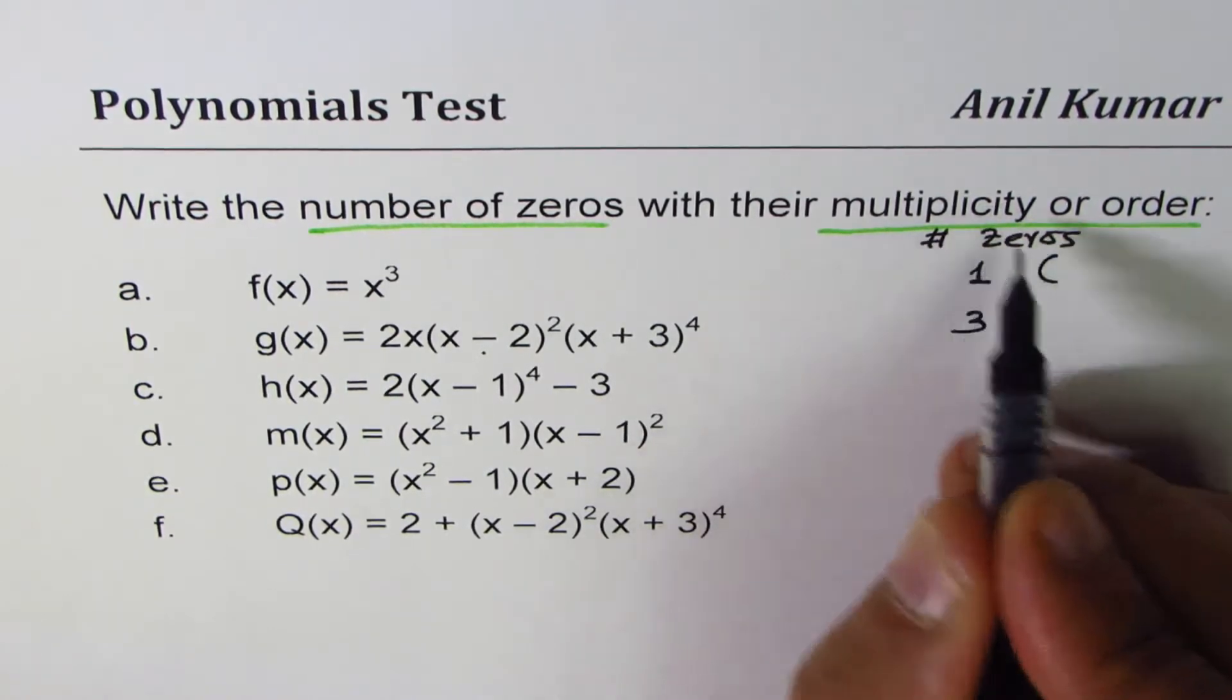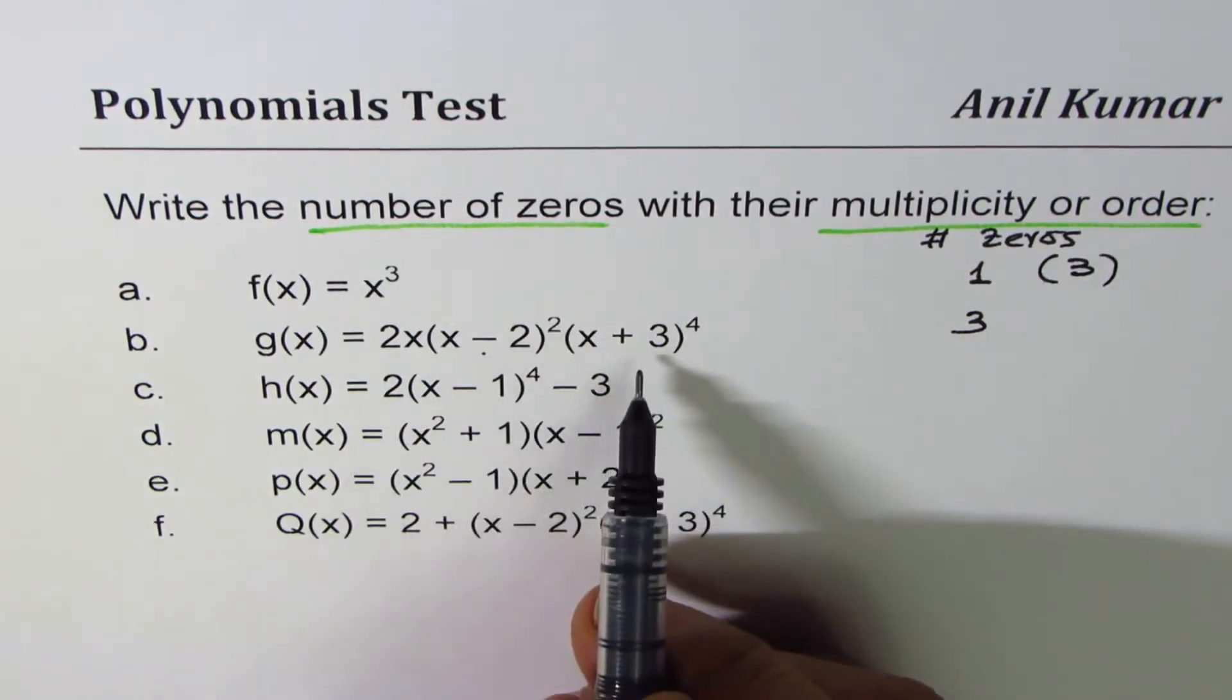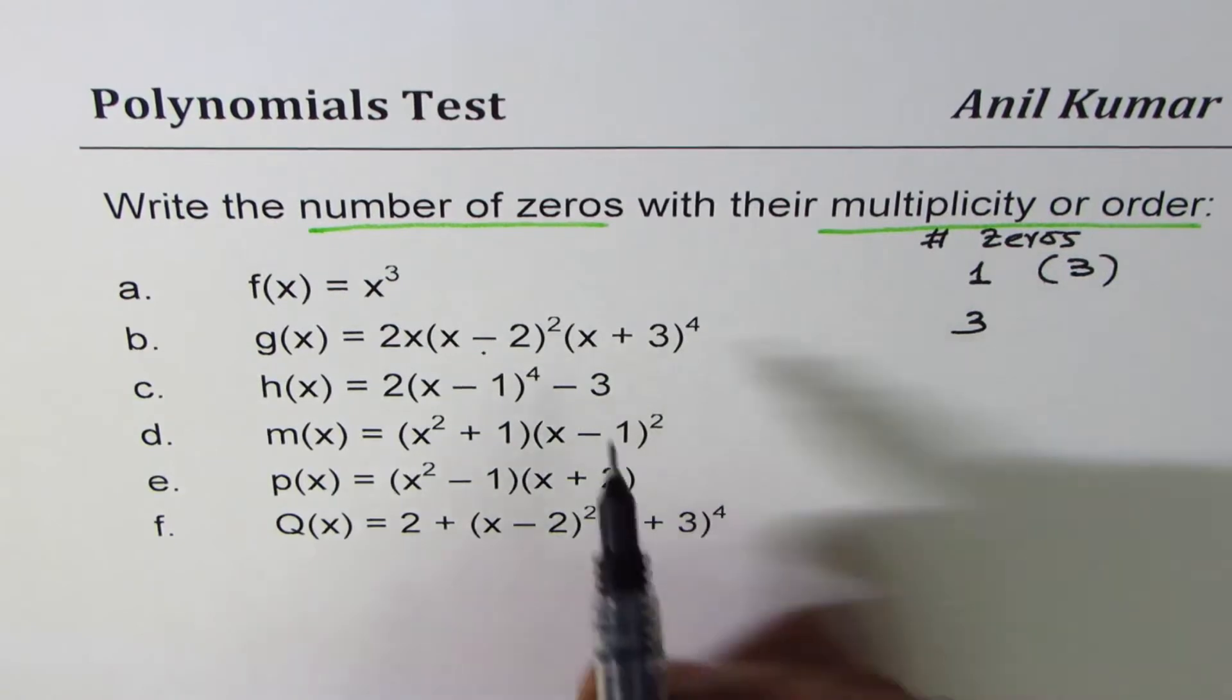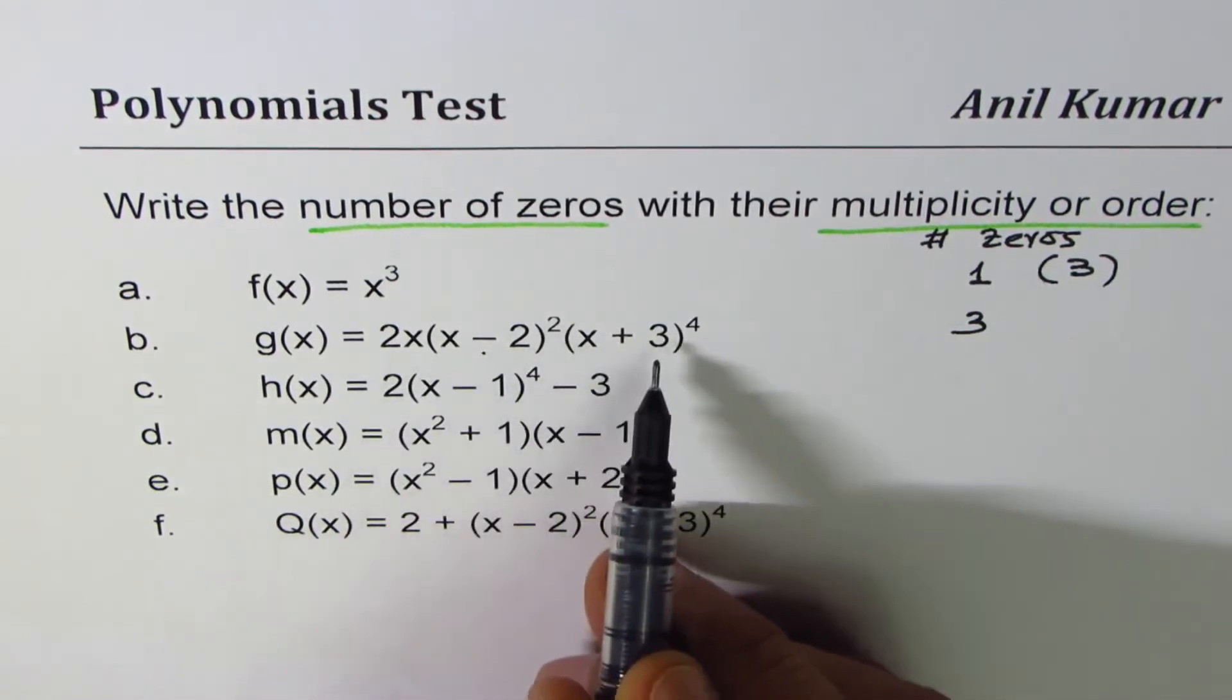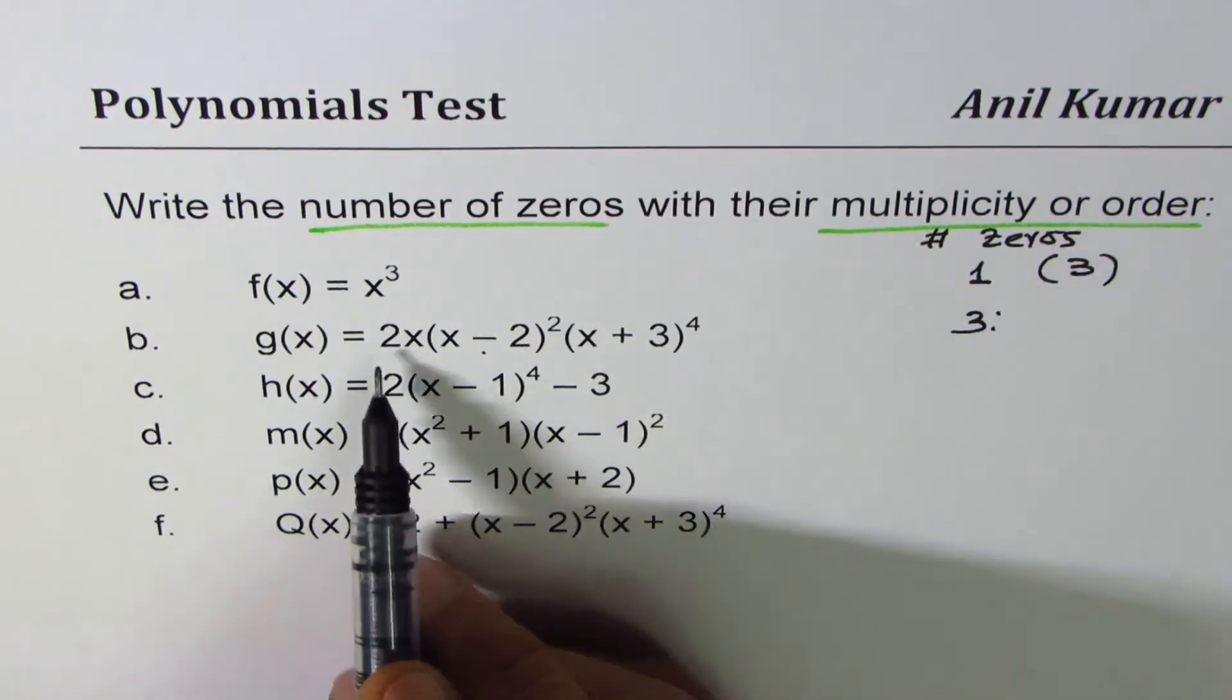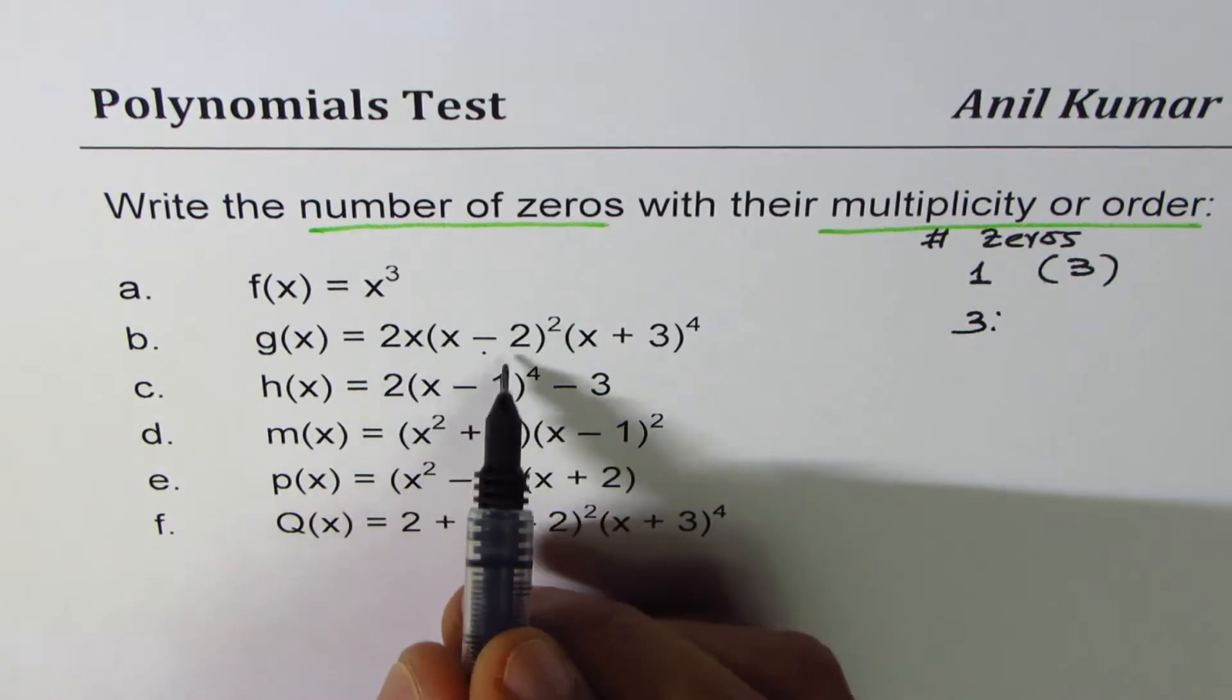In the second case we do have three zeros, however they all have different multiplicity. The first one here is linear, so x = 0 is linear. Then at x = 2 we have order two.